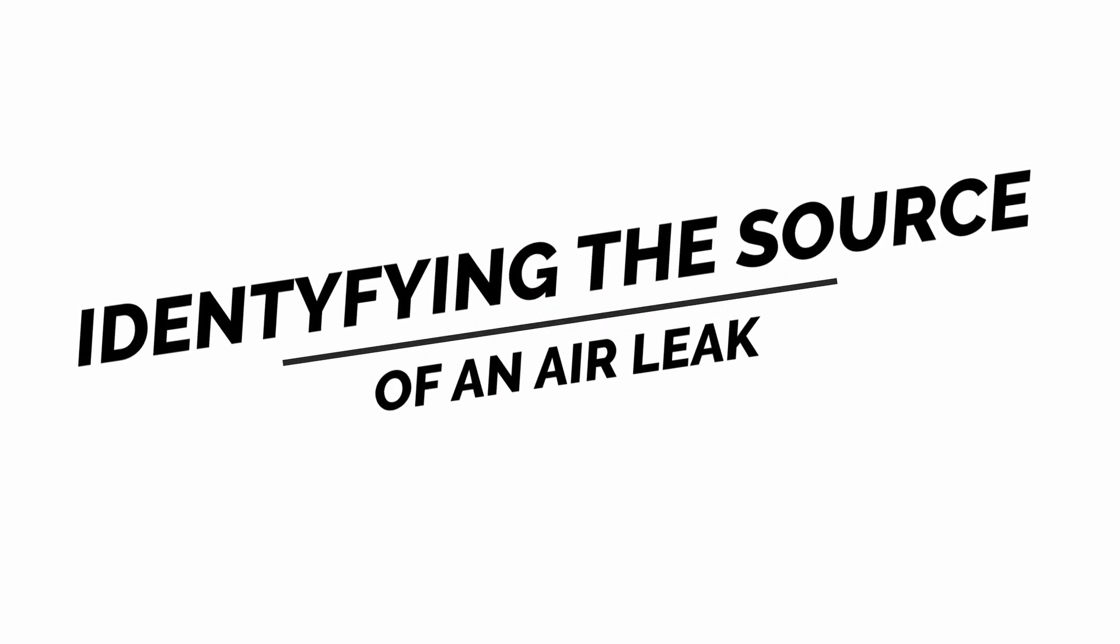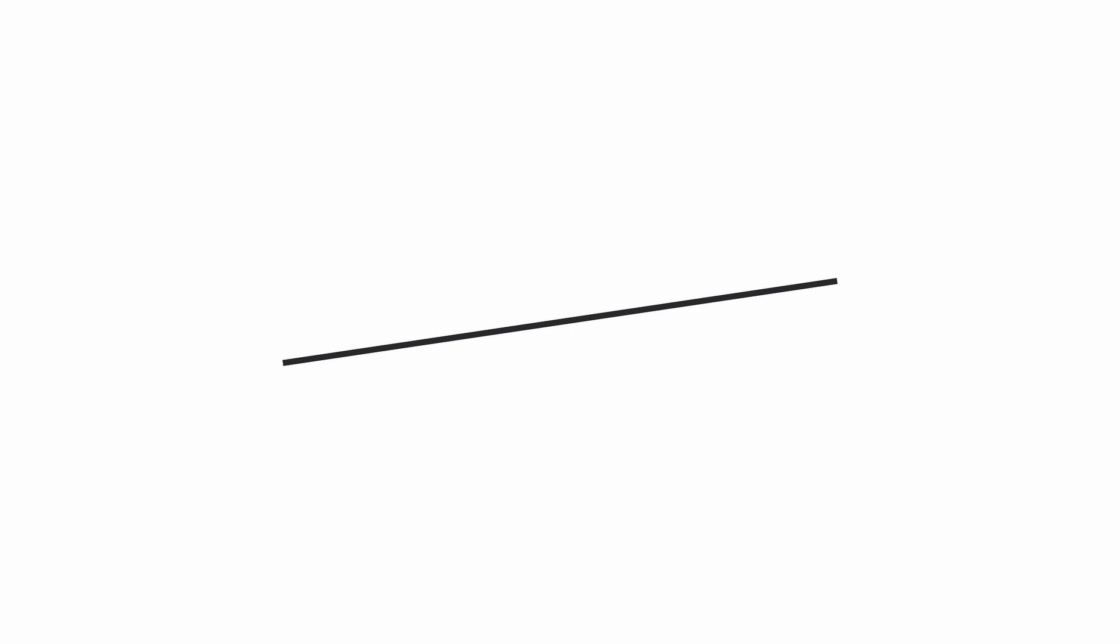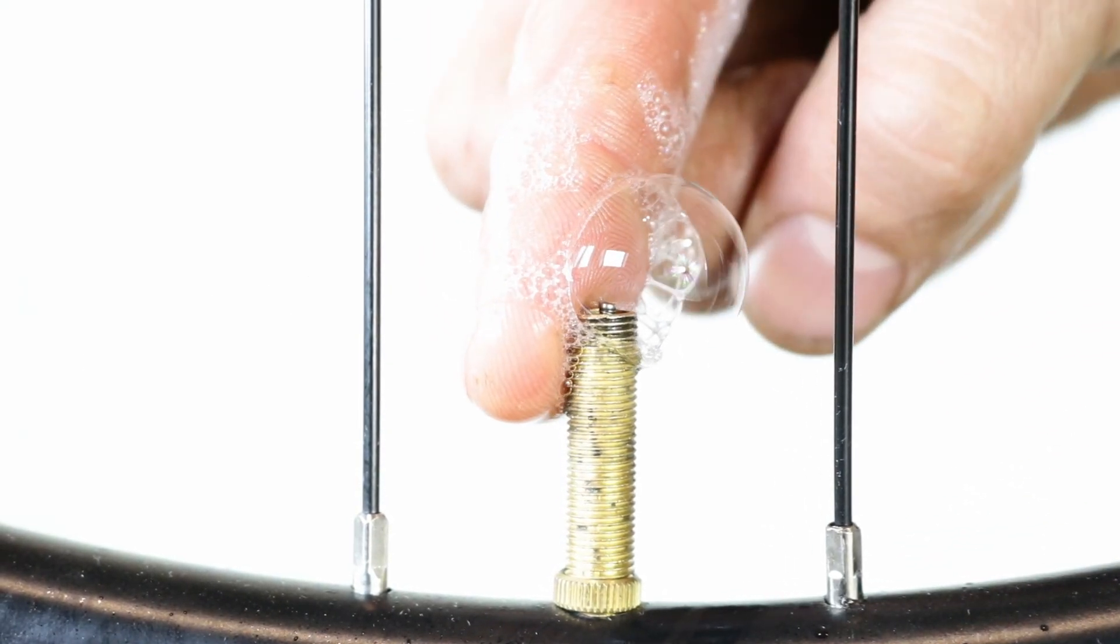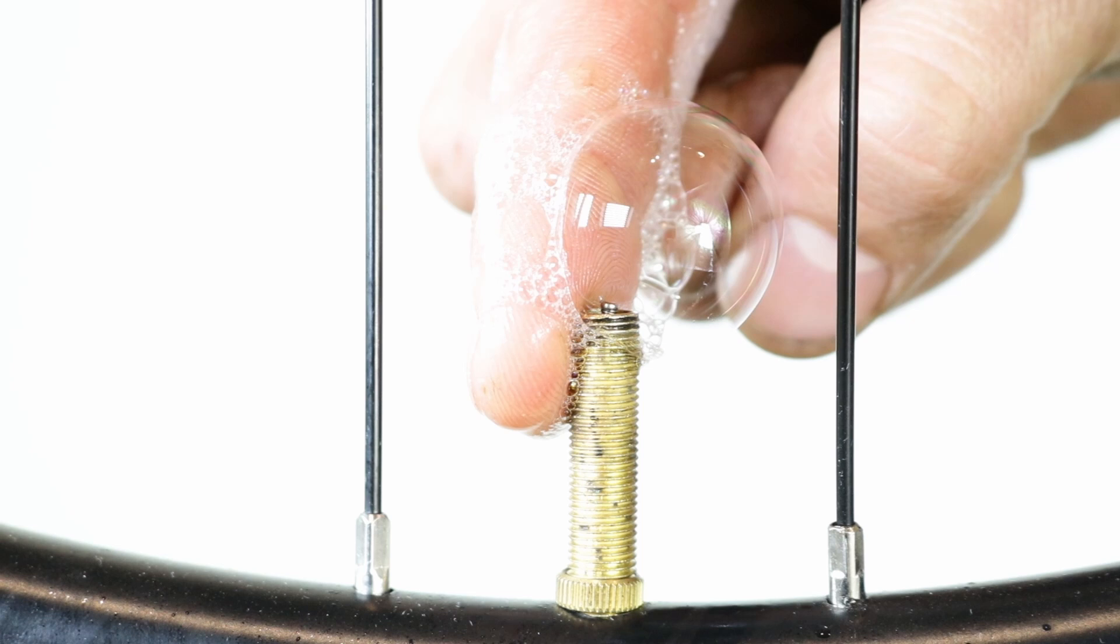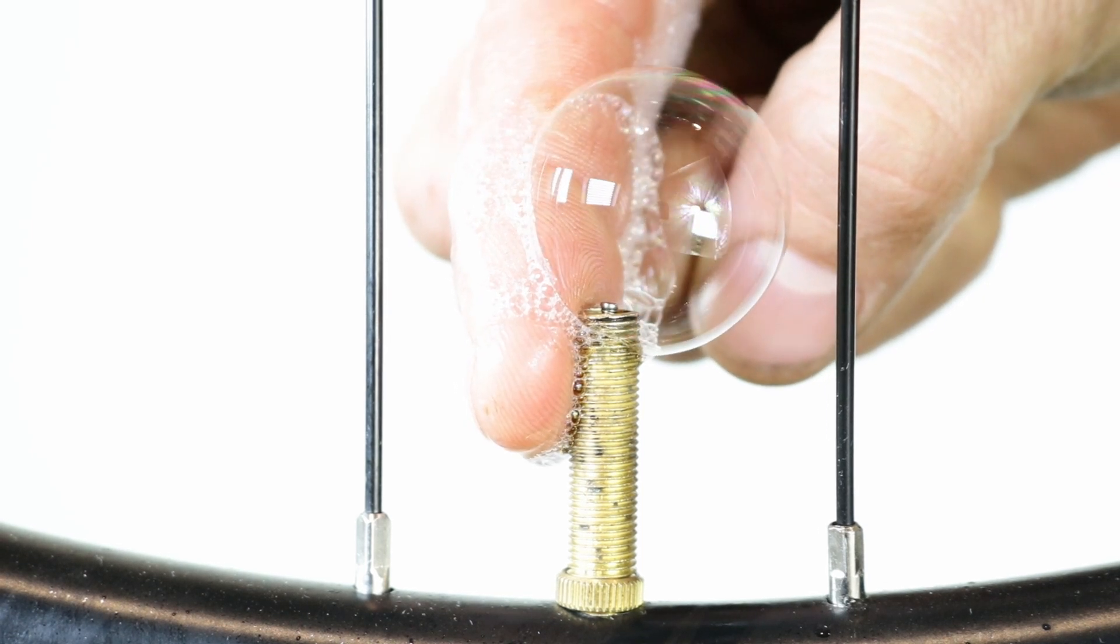Identifying the source of an air leak. Dip your finger into soapy water and cover the valve. If you observe bubbles forming it indicates an air leak in the valve.